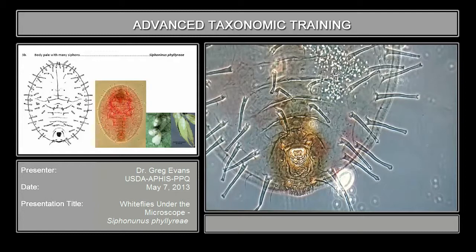This is the caudal end — the caudal cd and the vasiform orifice. You see that the operculum is very small and it only covers less than half of the orifice. But in this case, the siphons alone are enough to place it to genus.